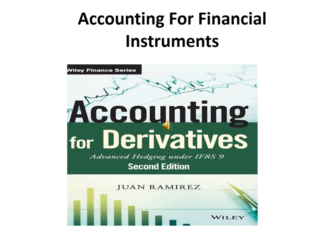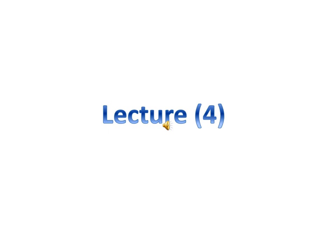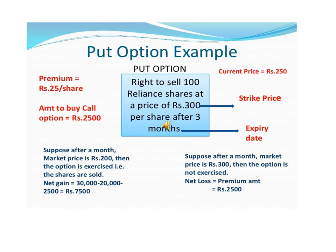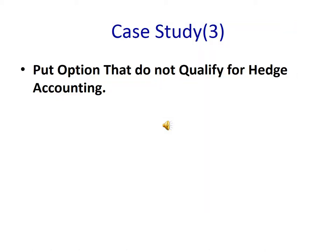Accounting for Financial Instruments. Look at share number 4. This is the second type of option, which is put option. It gives the holder the right to sell something like shares at a specific price after a specific time. This is the third case — it's about put options that don't qualify for hedge accounting. Again, there is no hedging relationship, no hedging item or hedging instrument — just accounting for the put option contract.